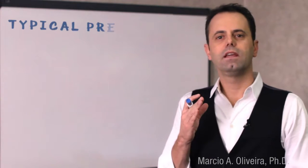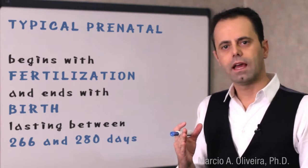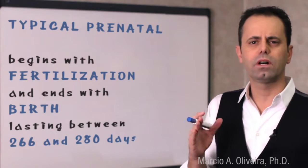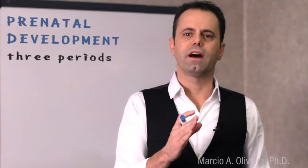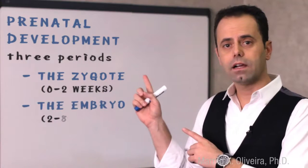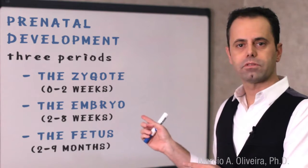Typical prenatal development begins with fertilization and ends with birth, lasting between 266 and 280 days — about 38 to 40 weeks. Prenatal development is usually divided into three different periods: the zygotic, the embryonic, and the fetal periods.